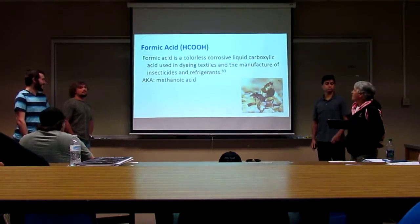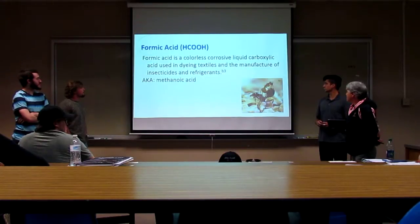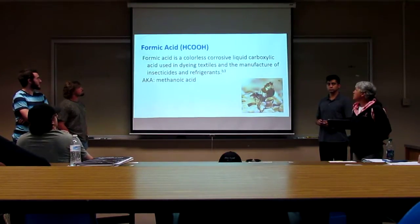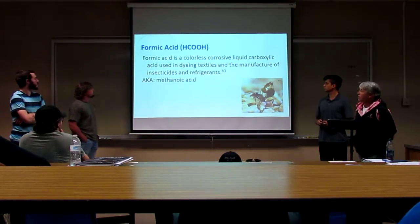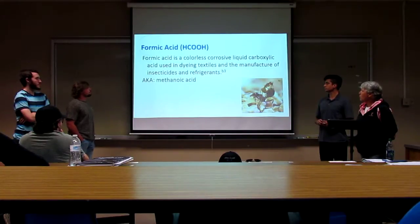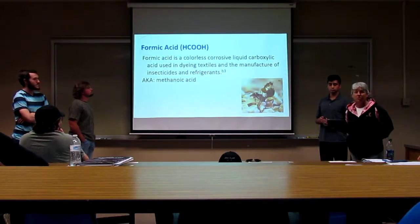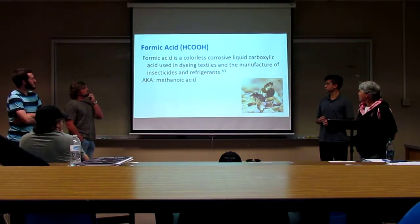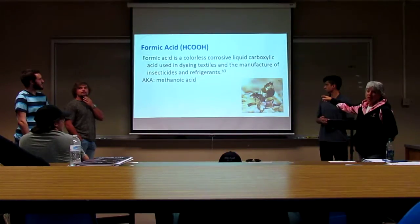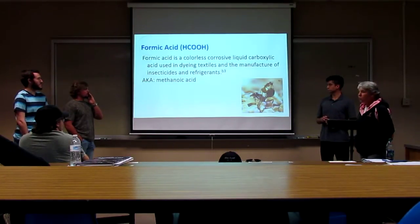Formic acid — also called methanoic acid — is generally a colorless, corrosive liquid. It is a carboxylic acid used widely in dye textiles, manufactured insecticides, refrigerants, and some pharmaceuticals. Interestingly, a group of ants produce formic acid — most people have experienced fire ant stings. The crazy ant can actually use formic acid to protect itself from the sting of the fire ant, a form of chemical warfare.